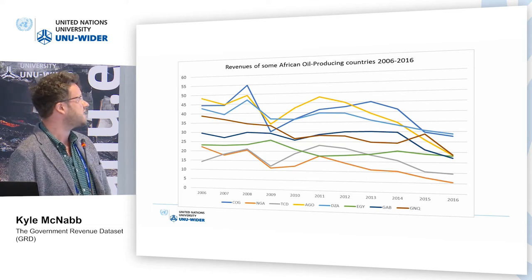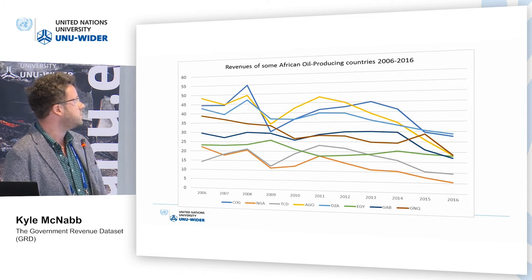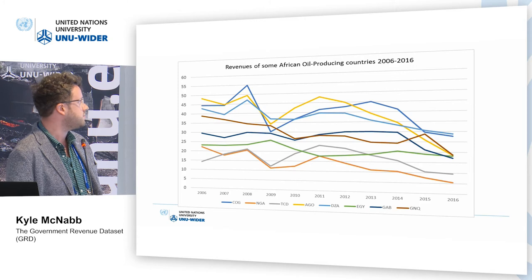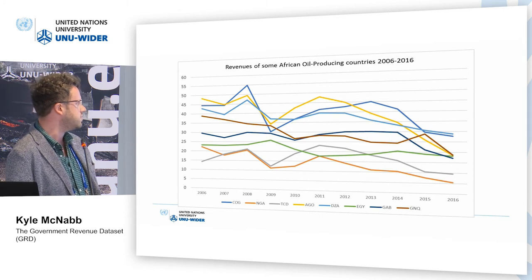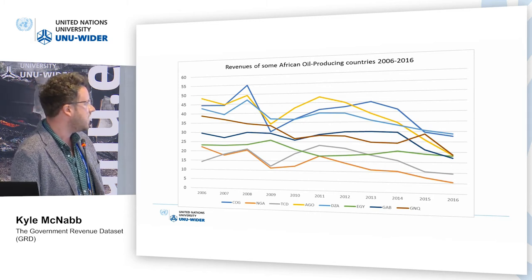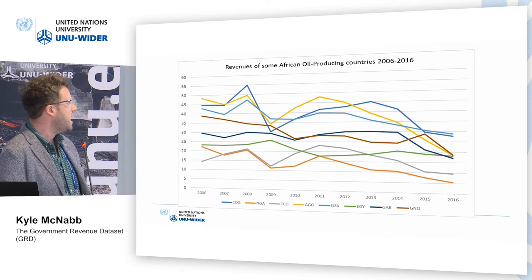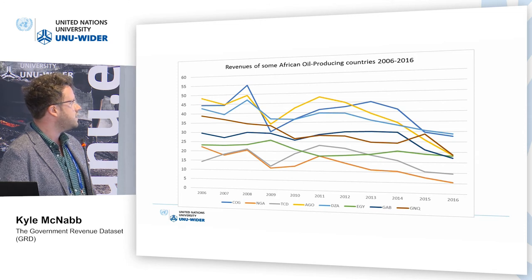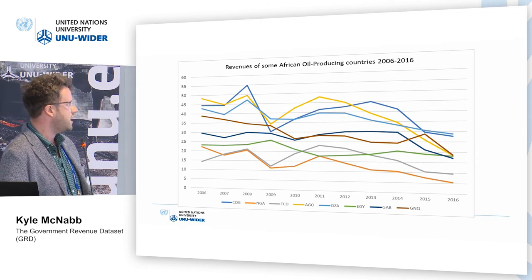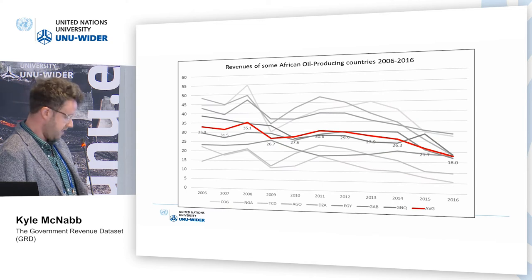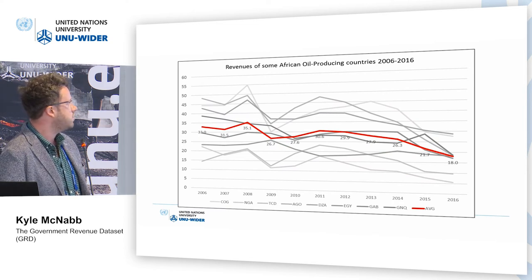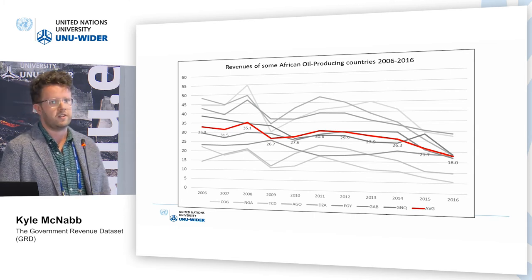I picked out data for some African oil-producing countries — Congo, Nigeria, Chad, Angola, Algeria, Egypt, Gabon, and Equatorial Guinea — showing total revenue as a percent of GDP. It fluctuates quite a lot, which is natural when you depend on natural resources. The oil price fell around 2014, and there are some remarkable drops in total revenue collection in these countries. Plotting an average, in just about four years the revenue has dropped from just over 30% of GDP on average to about 18% — so many countries are facing big struggles.